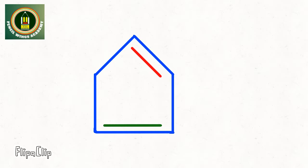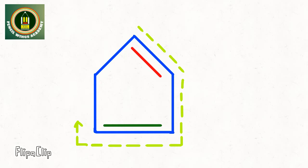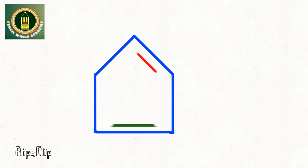Let's see the delocalization of pi electrons in a system with double bond-double bond conjugation. This will be the direction of movement of pi electrons. Now both the pi electrons will move to the next atom.